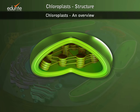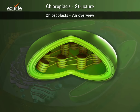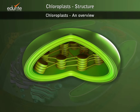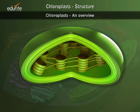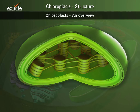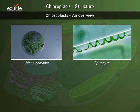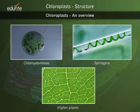Chloroplasts are membrane-bound organelles that act as the main centers for photosynthesis. The number of chloroplasts varies widely in different plants. For example, in green algae like Chlamydomonas and Spirogyra, the number of chloroplasts present in each cell remains constant. In higher plants, the number of chloroplasts varies from cell to cell.